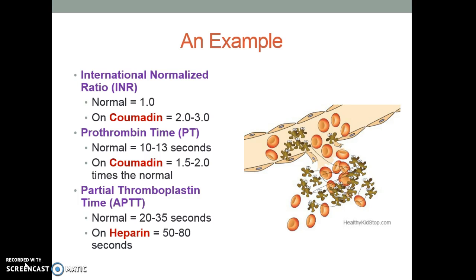The partial thromboplastin time, also known as the activated PTT or aPTT, is used to monitor heparin therapy. On heparin, therapeutic is generally considered 50 to 80 seconds, though some institutions use 60 to 80 seconds as the target. Heparin is usually adjusted when given in IV form on a sliding scale to maintain or reach a level in the therapeutic range.